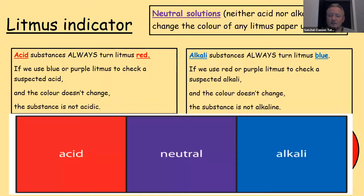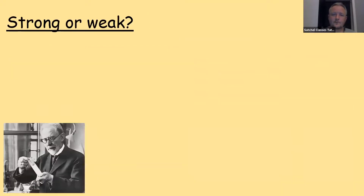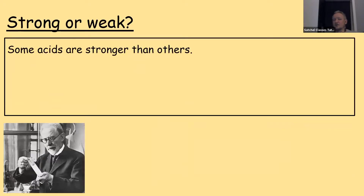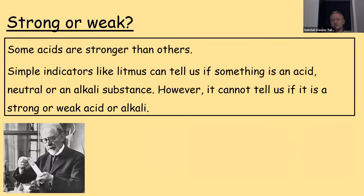So that means red litmus is an indicator of an acid solution, blue is an indicator of an alkaline, and neutral solutions would stay purple. Some acids are stronger than others. Simple indicators like litmus can tell us if something's an acid, neutral, or an alkaline, but they can't tell us if it's a strong or a weak acid or alkaline.